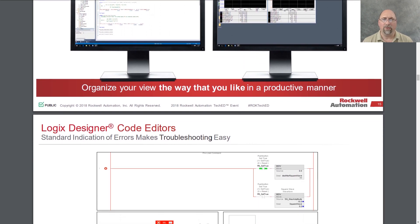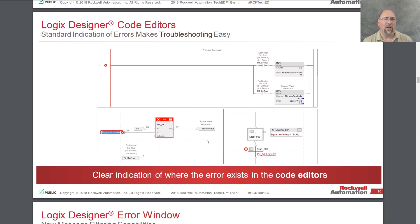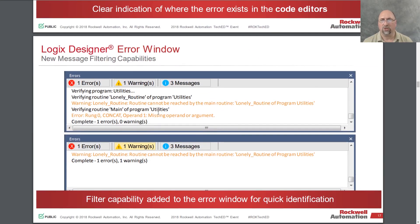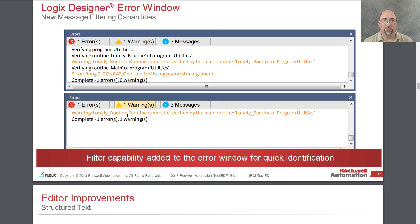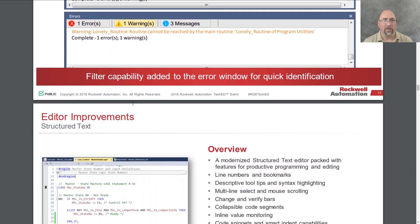They're showing examples of how that would look. In Logic Designer, the code editors, they try to make all the indicators standard - so if you see a red X it means the same thing everywhere: there's a problem. Now they're also showing how you can filter error messages - errors, warnings, and messages. That's huge, because I almost never look at the warnings. A lot of warnings are not applicable to what you're doing. Being able to filter them to see just what you have to fix before you can download is huge.